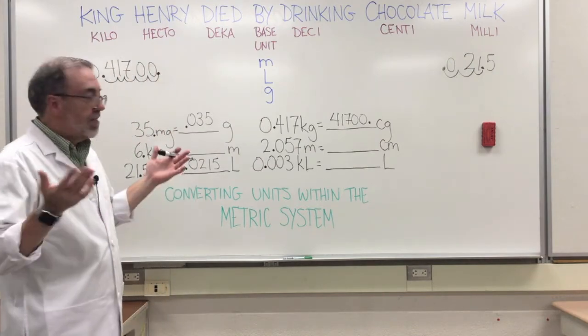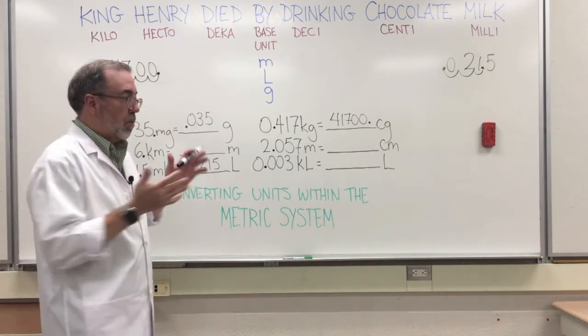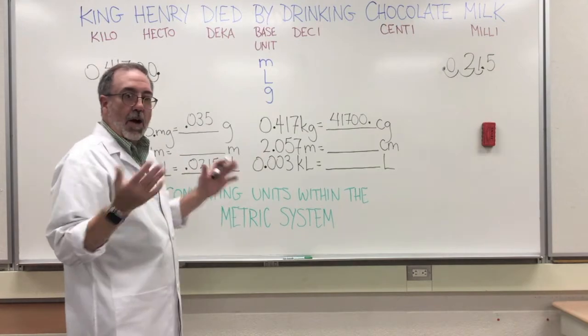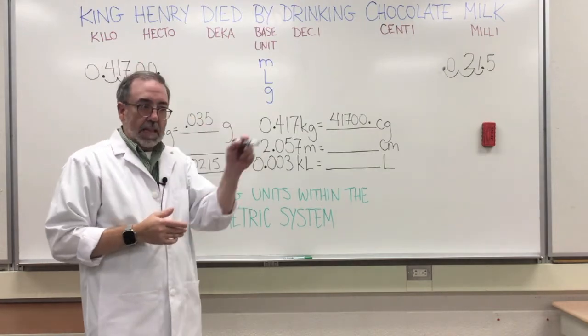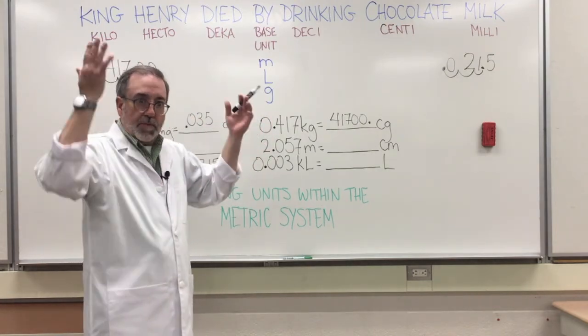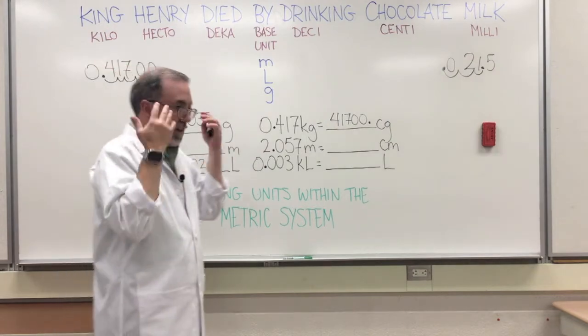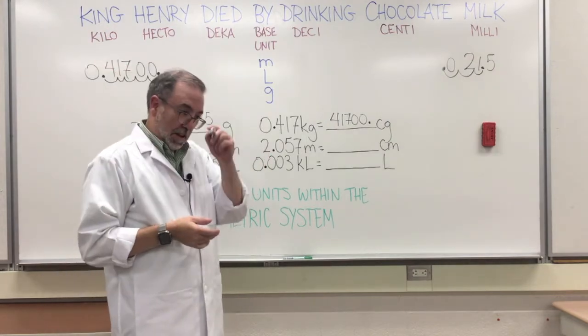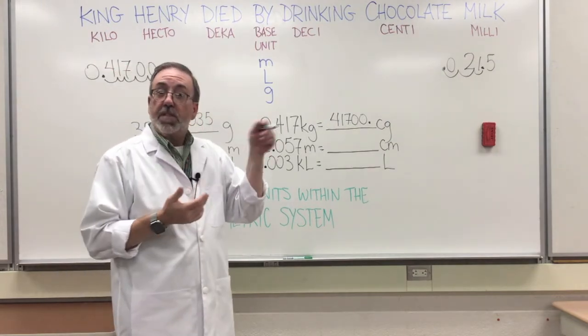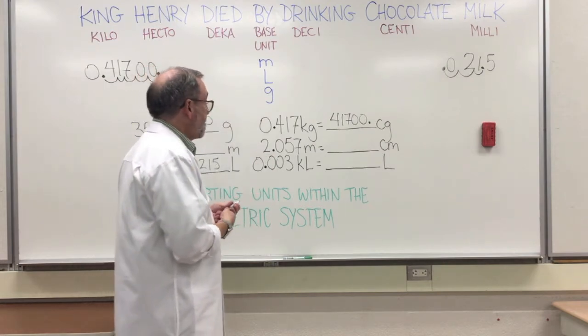That's it. Just remember which direction you're going, how many spaces, make that little bump bump bump, and then fill it in with zeros there. That's really all you need to do. I know you're gonna be successful.